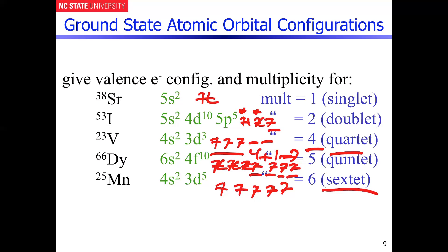To summarize: a spin multiplicity of one is a singlet, two is a doublet, three is a triplet, four is a quartet, five is a quintet, and six is a sextet. The most number of unpaired electrons we'll face in a d-orbital configuration is five unpaired electrons, so the highest spin multiplicity you'll see is a sextet.